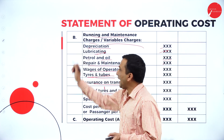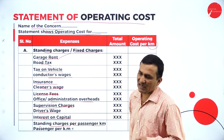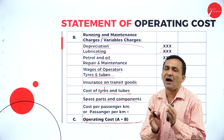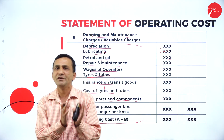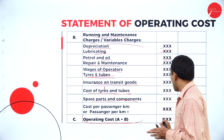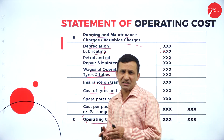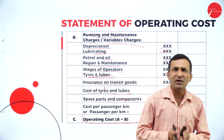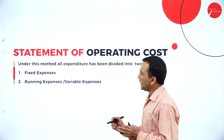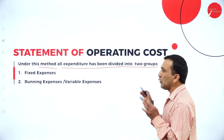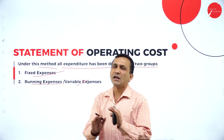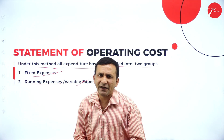Moving forward: if you take A — A is nothing but your standing or fixed charges — and A plus B, where B is nothing but your variable charges, together they give you the total operating cost. When we talk about service, no doubt it is operating costing. Operating costing: fixed cost plus variable cost, which is A plus B. We need to take the cost per kilometer. If they clearly specify one-way or two-way: a one-way trip means only one side, or round trip means up and down. Under this method, all expenditure is divided into two groups — fixed expense and running/variable expense.